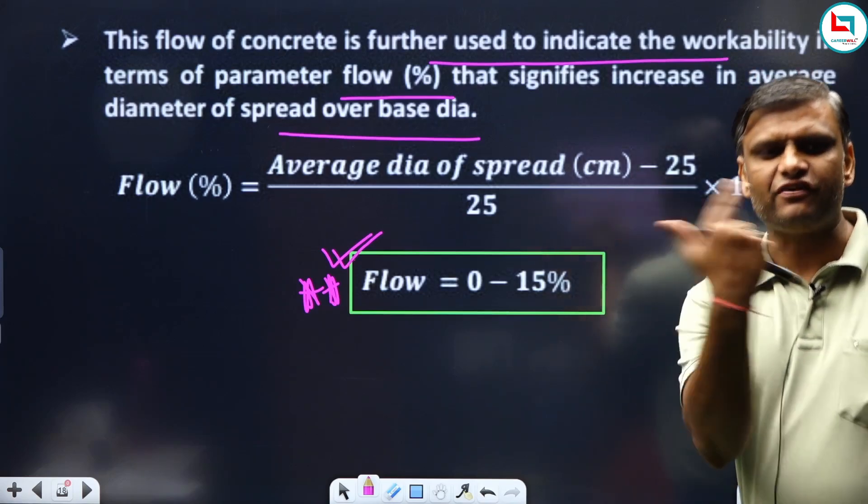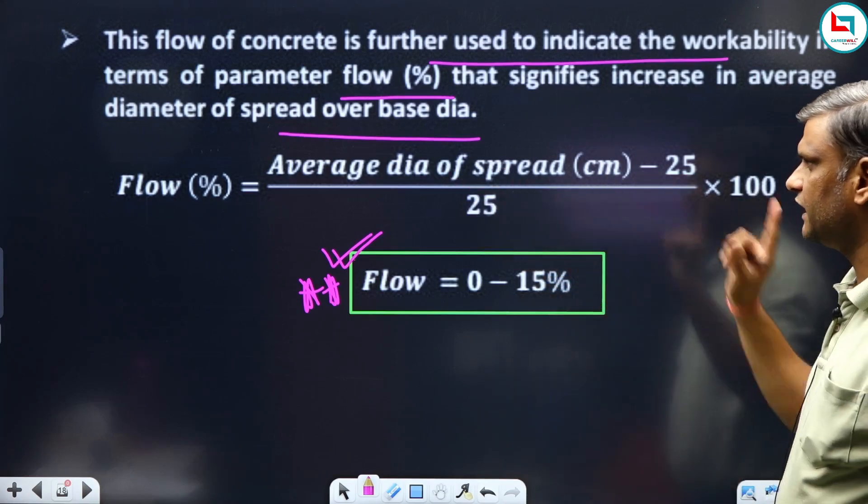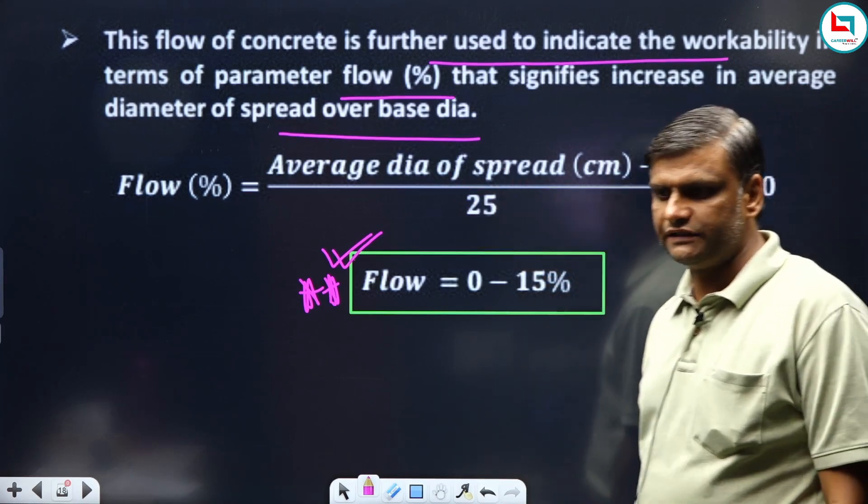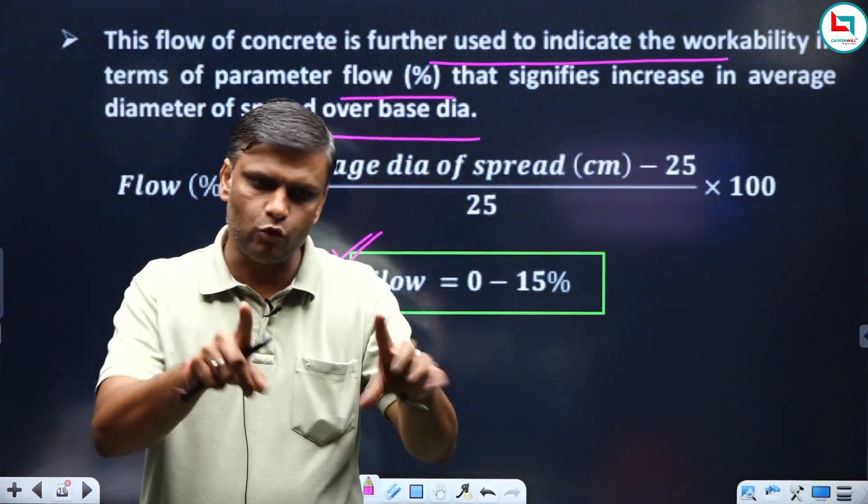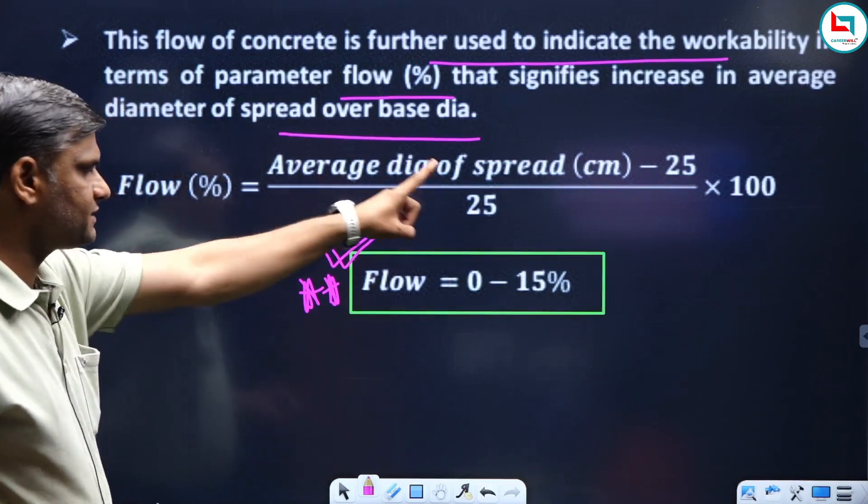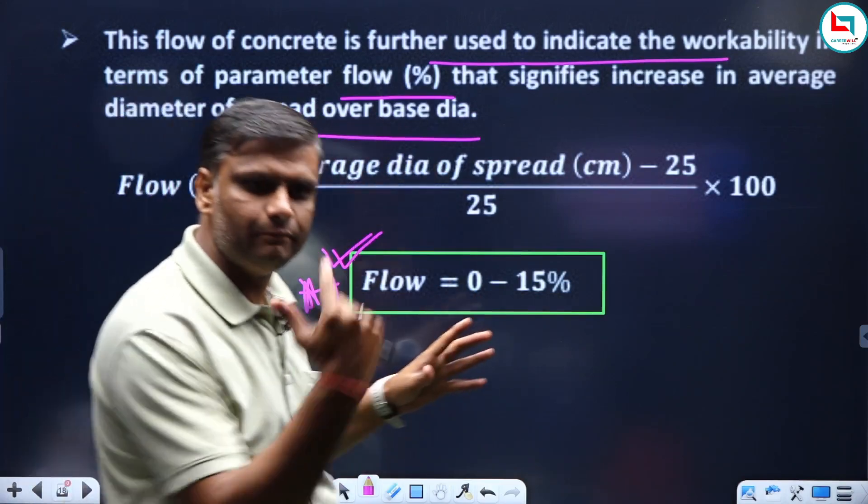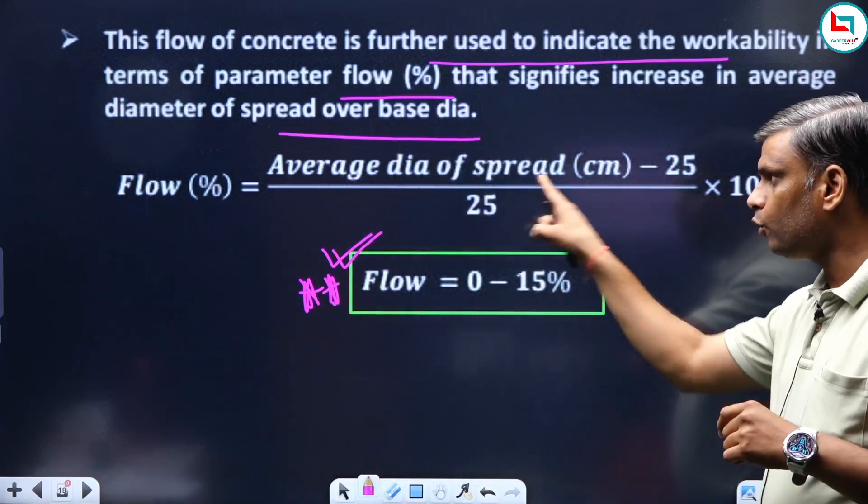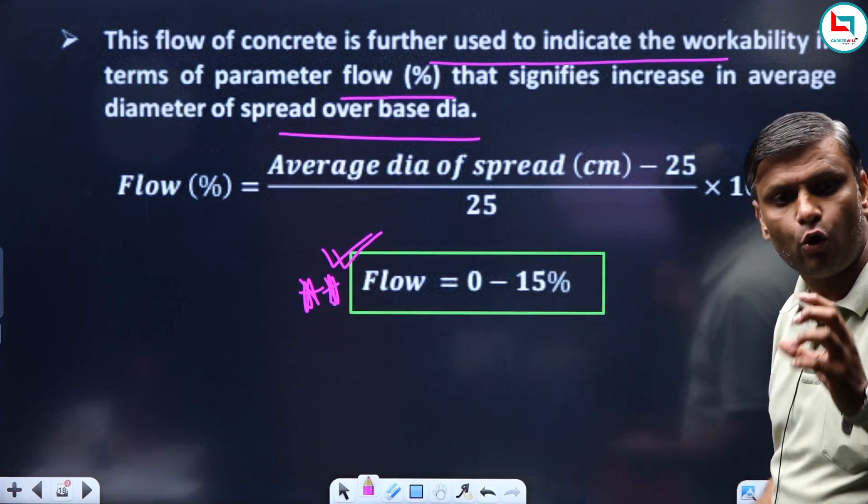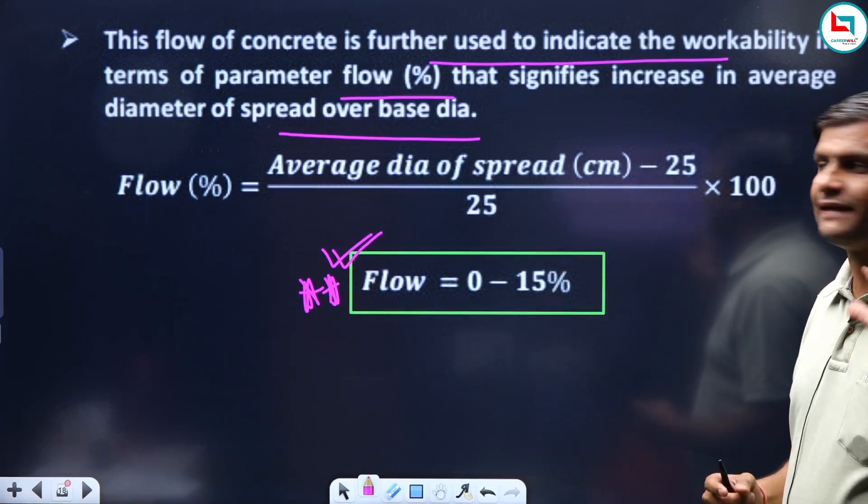If the diameter is 25, that is the base diameter of 25 centimeters. The average diameter of the spread is how much it is, I need to see it. And I will deduct the 25, the base diameter. So flow percentage with respect to the original diameter of the bottom will be calculated.